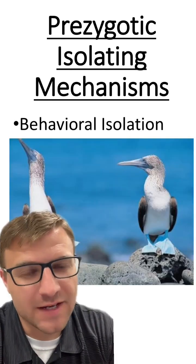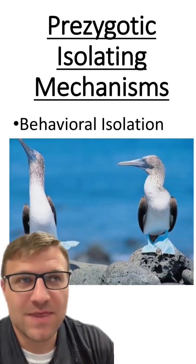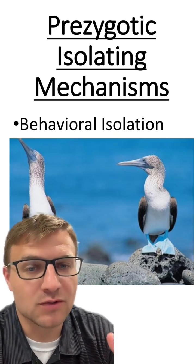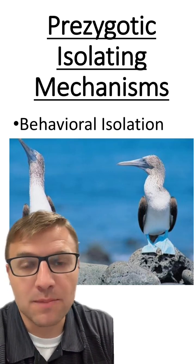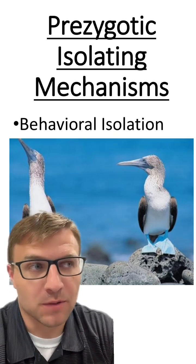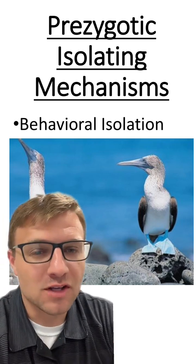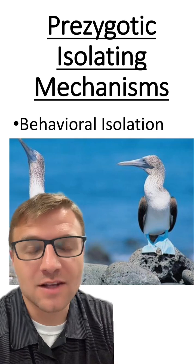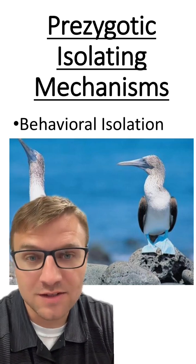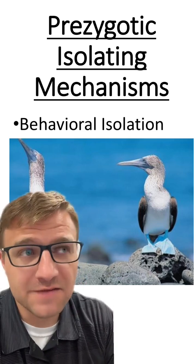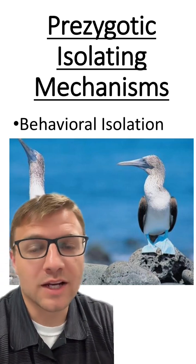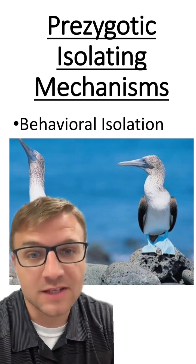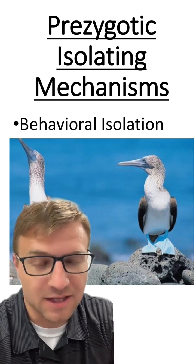Next is behavioral isolation. This is when the behavior of a certain group of organisms differs and stops the organism from reproducing. For example, the blue-footed booby has a particular dance that only attracts its own species. So the behavior here will regulate and stop reproduction from happening, which is a pre-zygotic isolating mechanism.